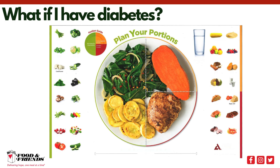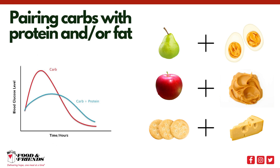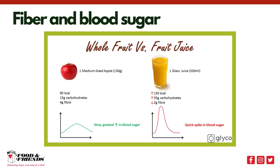Having too many or too few carbs can make it harder for our bodies to manage blood sugar. Another way to balance carbohydrates is pairing them with protein and/or fat. Eating carbs with protein or fat slows down how quickly our body breaks down and absorbs sugar into the bloodstream. The plate method helps with this by pairing starches with protein, but you can also apply this idea to snacks — for example, fruit with a hard-boiled egg or peanut butter, or crackers with cheese. By adding protein and/or fat, your body's blood sugar will increase more gradually than if you ate the carbohydrates alone.